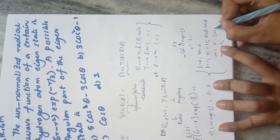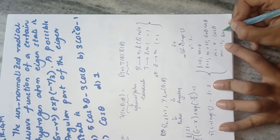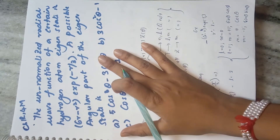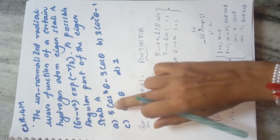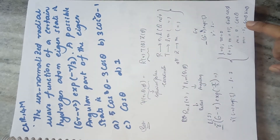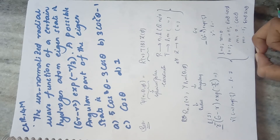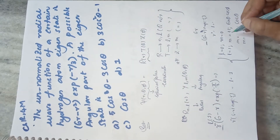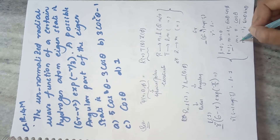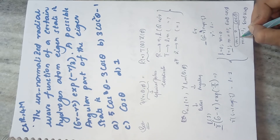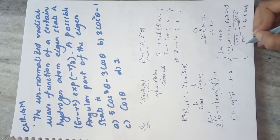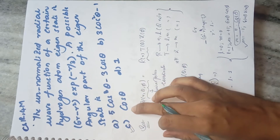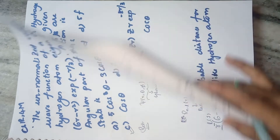Looking at the options, none of them contain a sine function. The answer cannot be a constant (no angular dependence) and options A and B have no sine function, which rules out m = ±1. The only possibility is m = 0, which gives cos θ. So the correct answer is option C: cos θ.